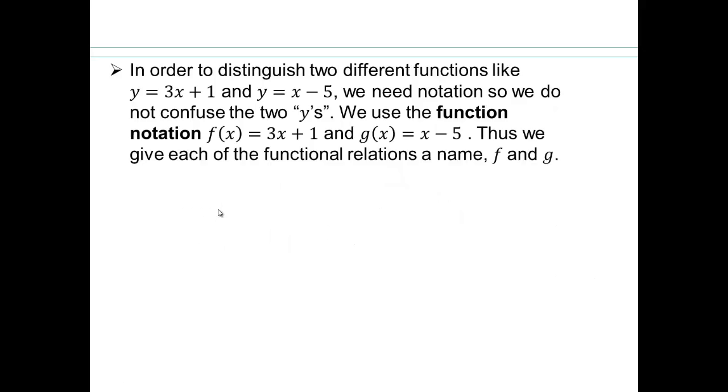In order to distinguish between two functions, like y equals 3x plus 1, and y equals x minus 5, how do you know which y you are referring to? That is why mathematicians have created a new notation. f is the name of this function, x is the input or the argument, and 3x plus 1 is the output. Here, g is the name of the function, x is the input, x minus 5 is the output. So this that goes in here is called input or argument, and this here is called the output.